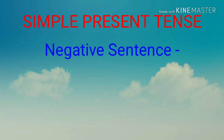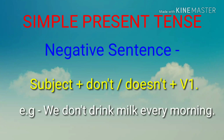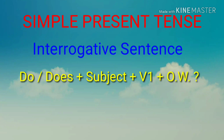Simple present tense का negative sentence बनाने के लिए: subject plus don't or doesn't plus first form of the verb — इस formula का इस्तिमाल करना पड़ेगा। For example: 'We don't drink milk every morning' — हम हर सुबह दूध नहीं पीते।